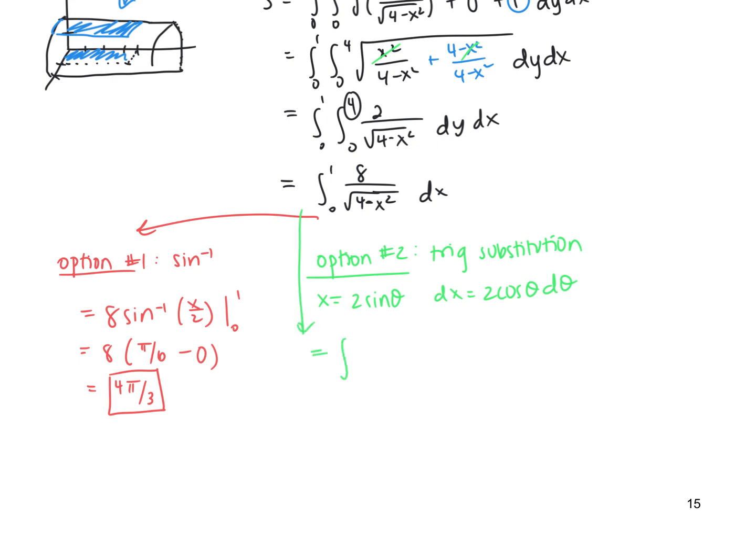If I substitute that in, this integral, then, becomes the integral of 8/√(4 - 4sin²(θ)) times 2cos(θ)dθ. So this denominator is going to end up being 4cos²(θ), and I'm taking the square root of that. So I have 8/(2cos(θ)) multiplied by 2cos(θ)dθ. So this, then, is the integral of just 8dθ. Now, to figure out my limits of integration, I'm going to take the 0 and 1, and I'm going to substitute those in for x. So then my limits end up being 0 and π/6. So you notice, then, we still end up with the answer 4π/3.